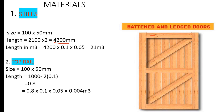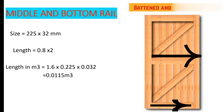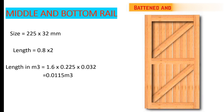The middle and bottom rails share the same timber size. Each has a length of 800 mm, so together that is 1.6 meters. In cubic meters: 1.6 × 0.225 × 0.032 = 0.0115 cubic meters. We calculate in cubic meters because timber is often priced per cubic meter in the market.